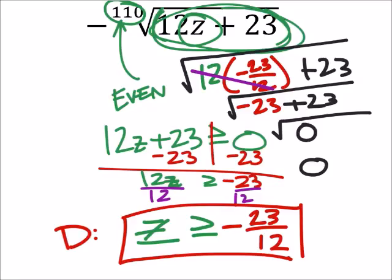Because we can't take the square root of anything less than that.